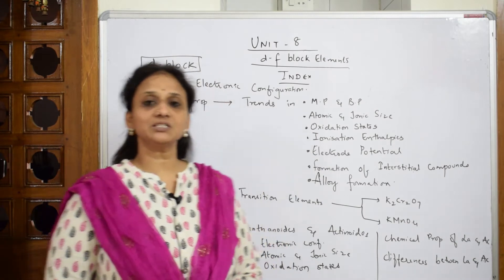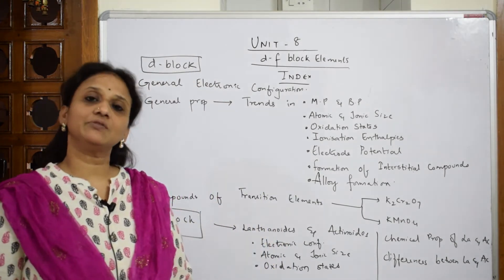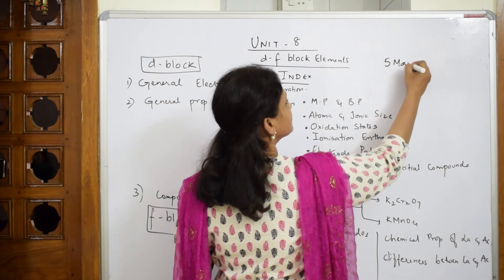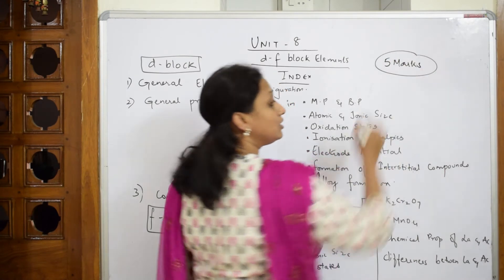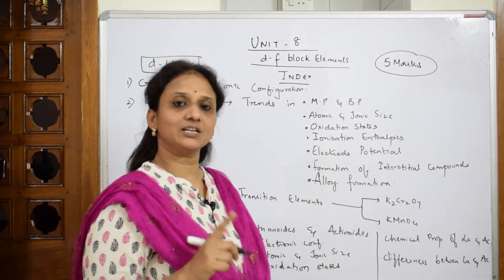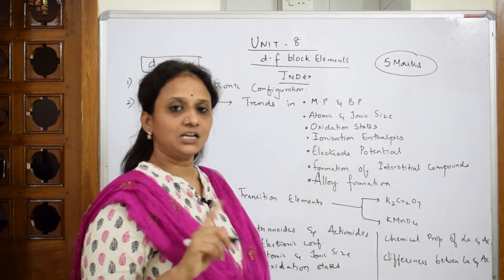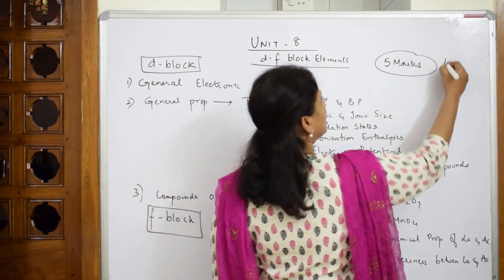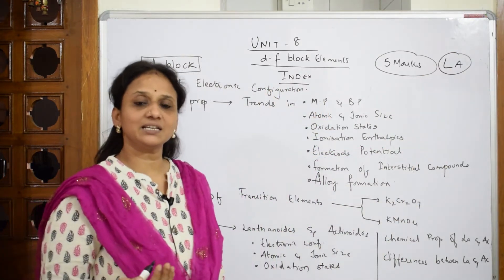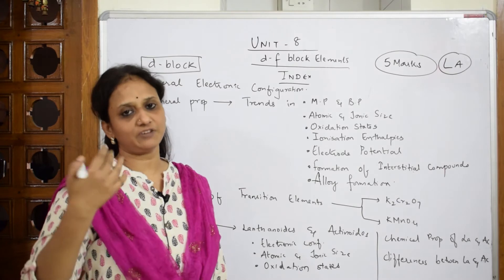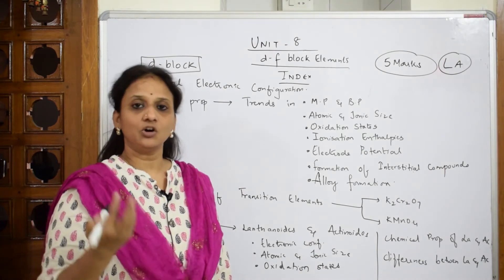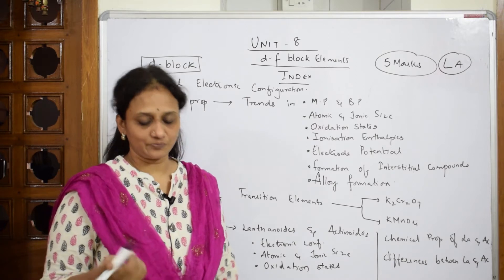For your grade 12 exam, the weightage for the D and F block elements chapter is 5 marks. You'll be getting one long answer from this chapter. That long answer can again be subdivided into 5 parts of one mark each, so you won't lose those 5 marks — or it can also be split as 2 and 3 marks.